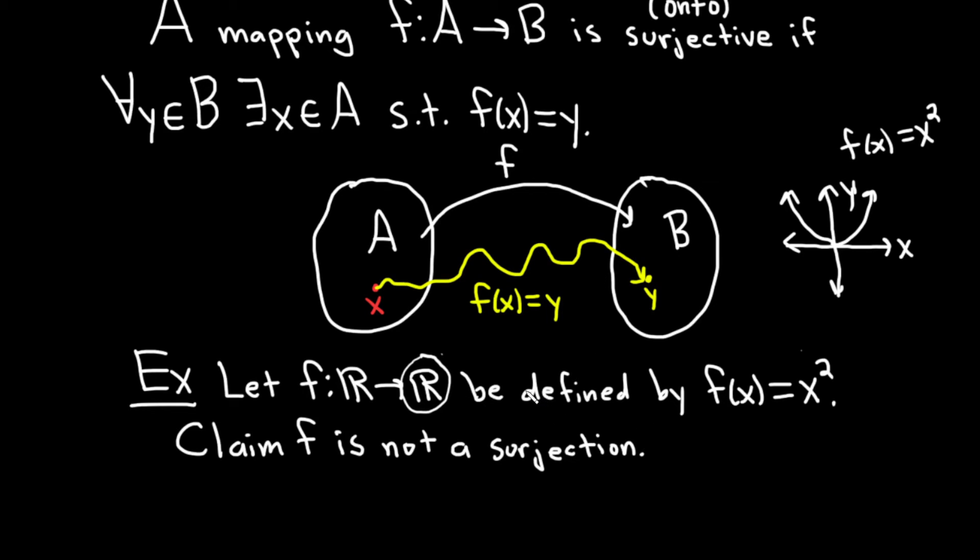All right, so all we need to do is produce one element which violates the definition because the definition says it has to work for all y. So all we have to do is produce one. And let's go with negative one. That's a simple example. We'll just say, note, negative one is an element in the set of real numbers. So I'm talking about this set here. This is your B. Okay, this is your A.